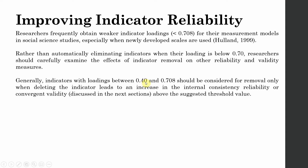Generally, indicators with loadings between 0.40 and 0.708 should be considered for removal only when deleting the indicator leads to an increase in internal consistency reliability or convergent validity above the threshold value. If your indicator loading was less than 0.70 — say 0.40, 0.50, or 0.60 — you only remove it if it significantly improves your reliability and validity above the threshold value.